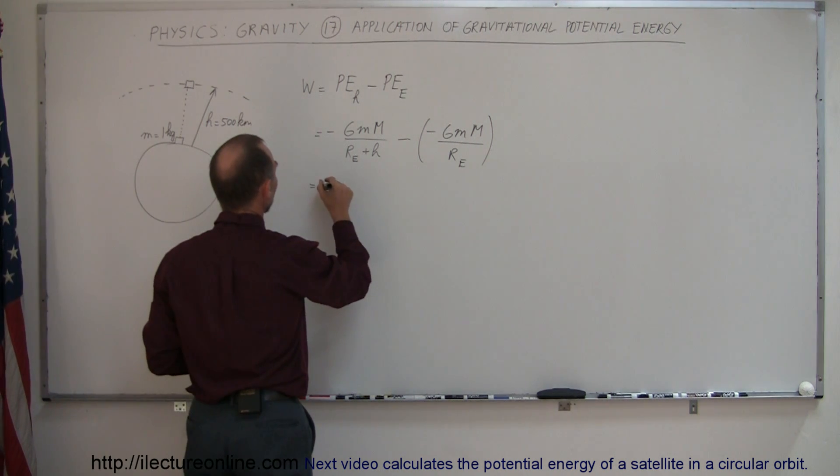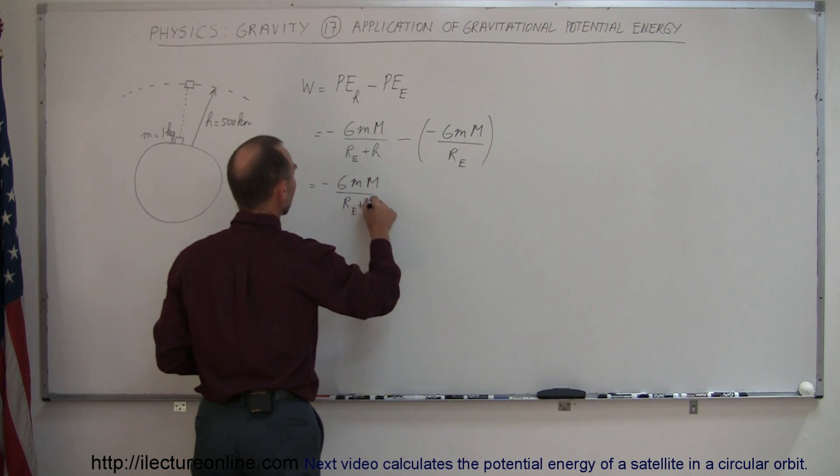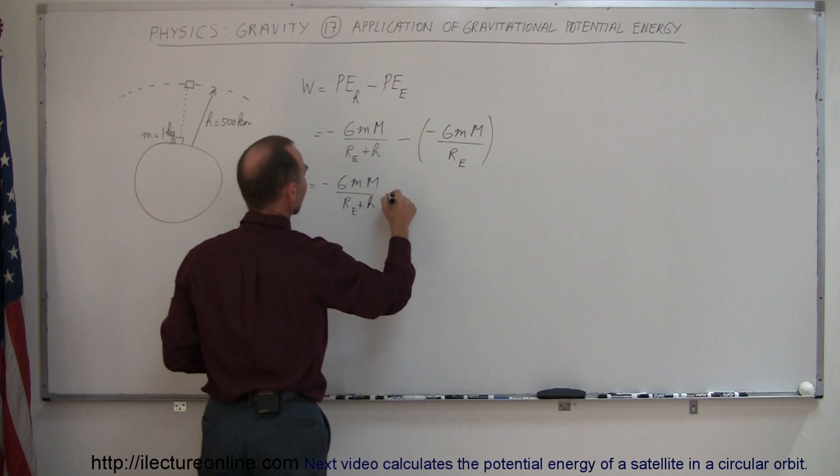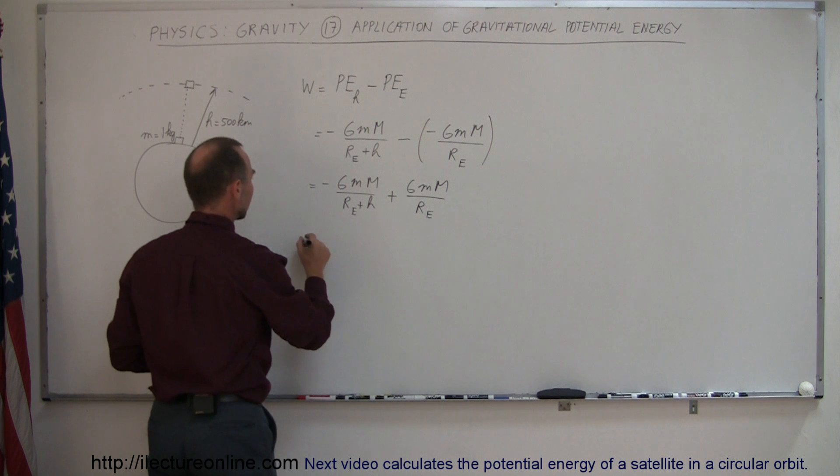So this is equal to minus GmM over R_Earth plus H. And minus times the minus is plus GmM over the radius of the Earth. Now we can go ahead and plug in the numbers.